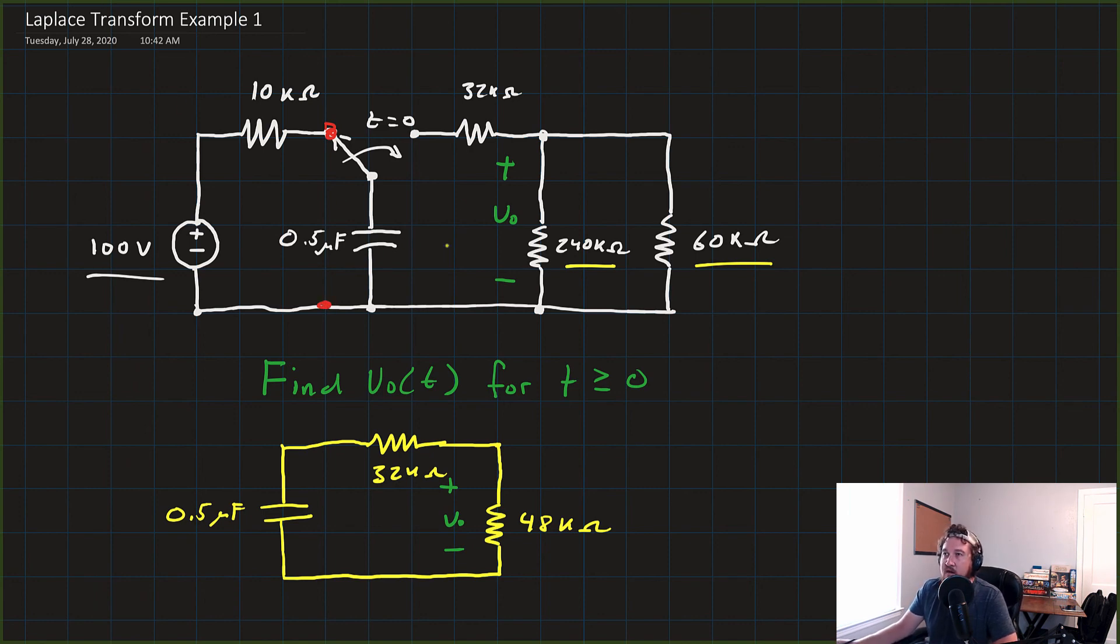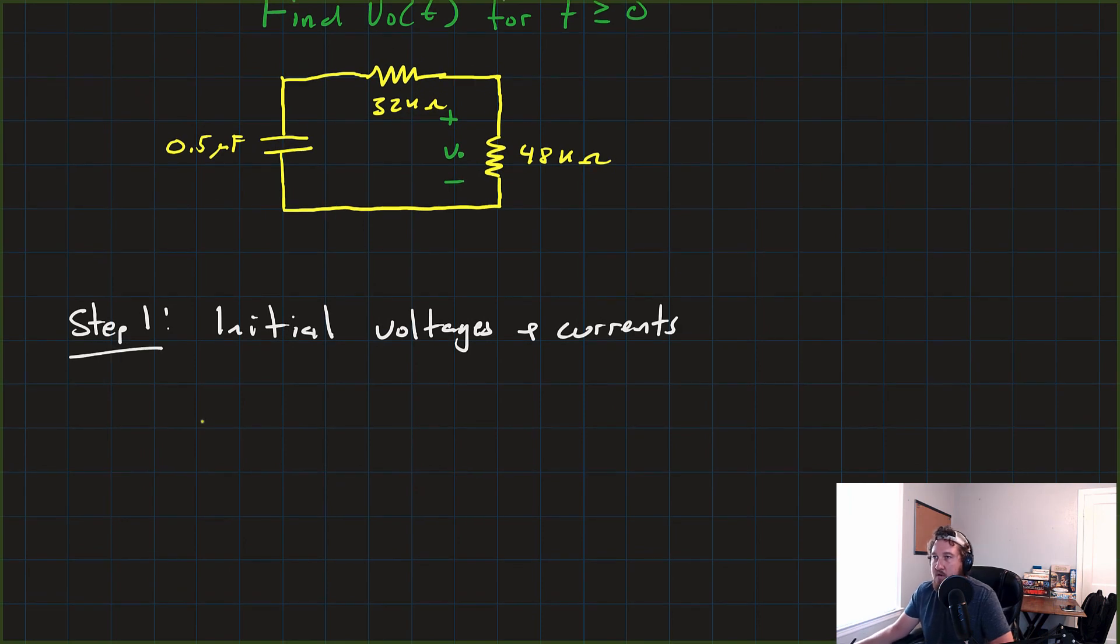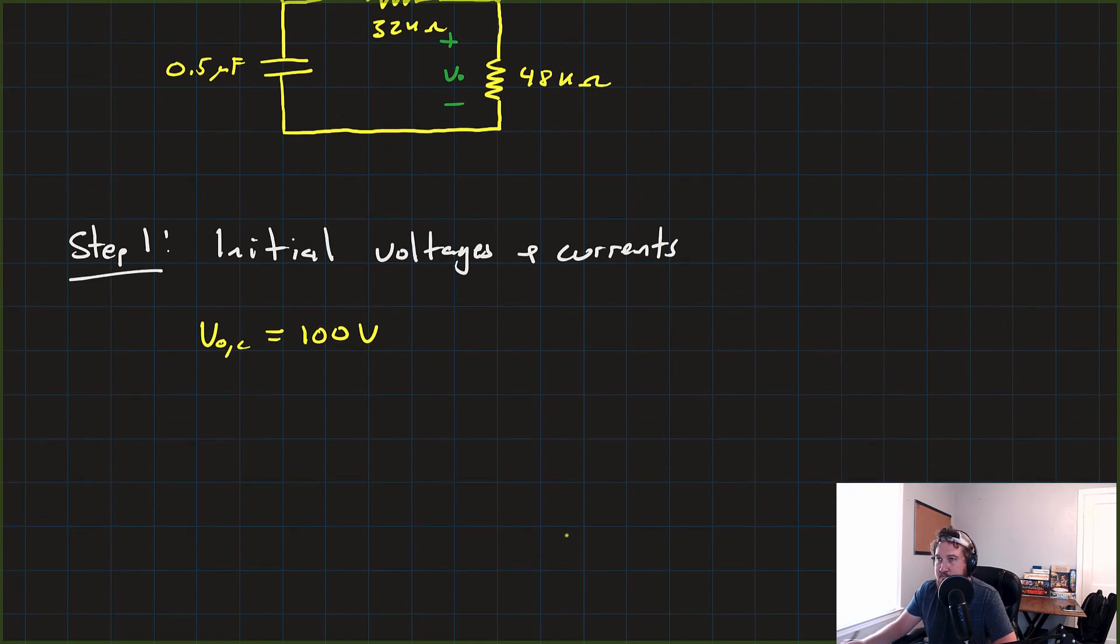So our initial voltage on this capacitor was 100 volts. So we'll say V-naught C was equal to 100 volts. So that'll come back when we do the Laplace transform of that capacitor. There's nothing else. There's no other capacitors or inductors, so everything else is the same.